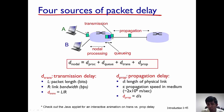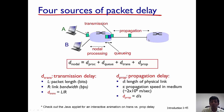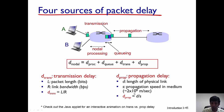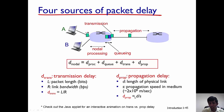Once the packet has been put onto the wire, it has to travel from one router to the next. The amount of time the packet takes to travel over the wire is called the propagation delay. It is dependent on the length of the wire and the speed at which the packet travels. Packets usually travel at approximately 2 times 10 to the 8 meters per second, which is close to the speed of light. The propagation delay is distance divided by speed, which is D over S.